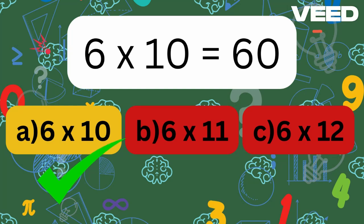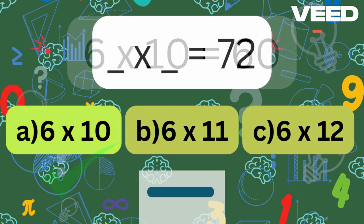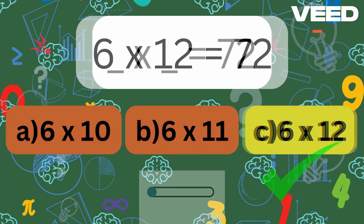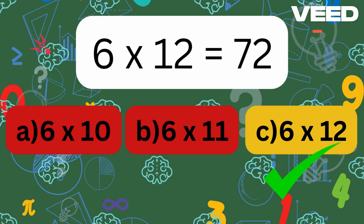6 times 10 is 60. What times what equals 72? 6 times 12 is 72.